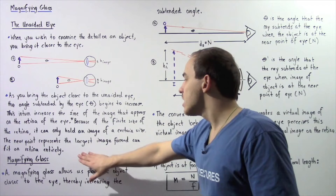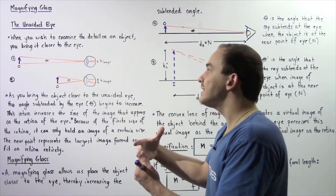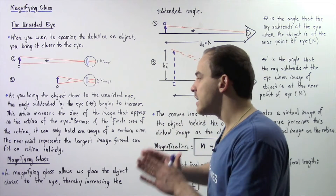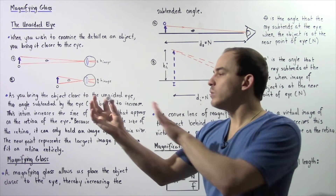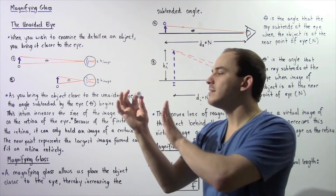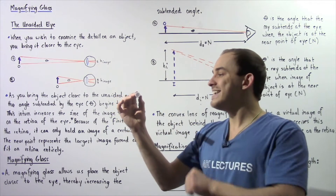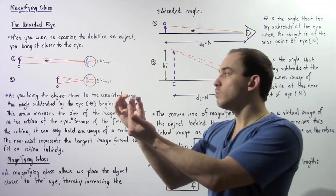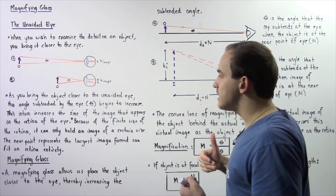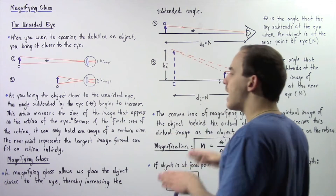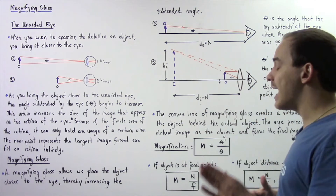The near point represents the largest image that can be formed on the retina that can still be seen very clearly. The near point is the minimum distance that we can bring our object and still see it magnified and clearly. If we decrease our distance below the near point, the object will begin to blur because our image becomes greater than the size of the retina itself. That's how the unaided or naked eye works.